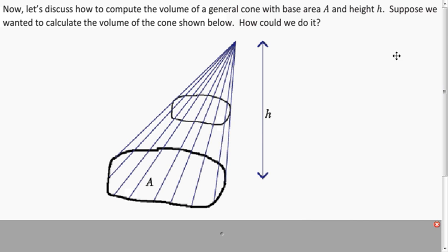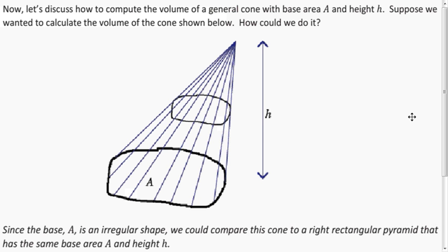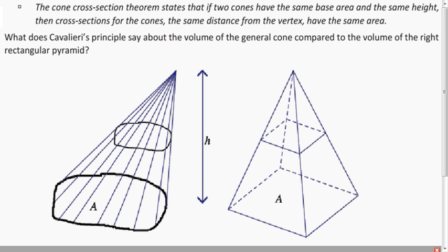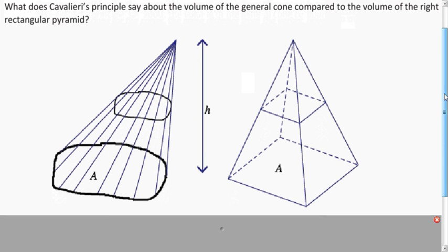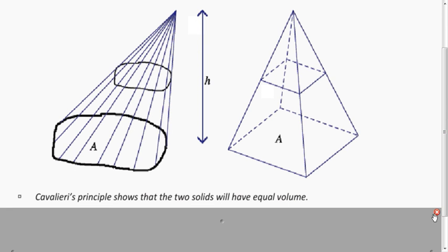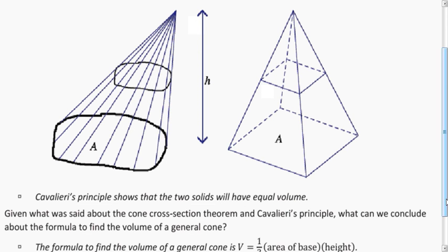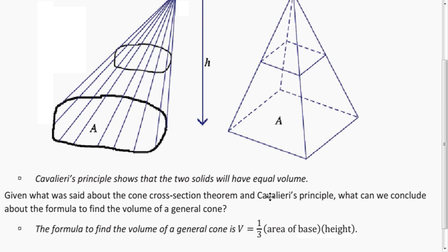We can extend this to general cones. To figure out the volume, we want to compare it to a right rectangular pyramid that has the same base area. We know the cone cross-section theorem: if the bases have the same area and the general cones have the same height, then any cross-section is going to have the same area. By Cavalieri's Principle, when all the cross-sections have the same area and the heights are the same, the volumes will be the same. So the formula for a general cone is also one-third the area of the base times the height.